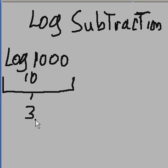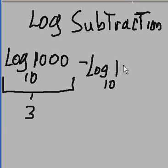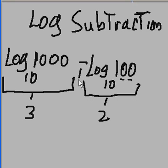So log base 10 of 1,000 is 3, minus log base 10 of 100. Well, 10 to what power equals 100? 2. Let's bring down the minus sign. 3 minus 2 equals 1. So log base 10 of 1,000 minus log base 10 of 100 equals 1.